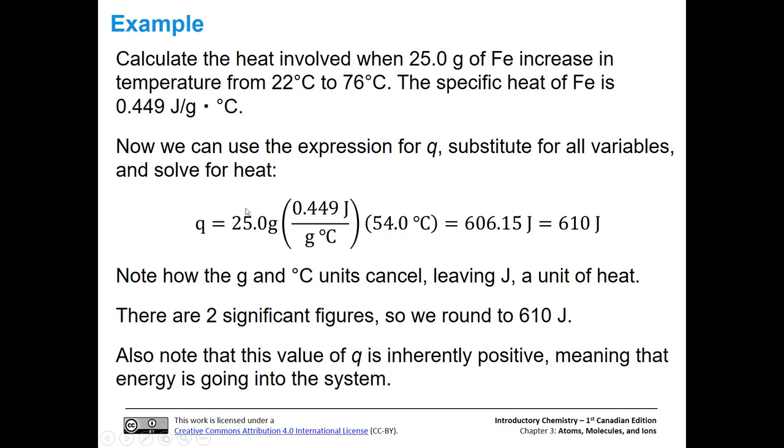Here's our mass of the metal. Q is equal to m times small c times delta T. So here's the mass of the metal. There's the heat capacity, which was given to us. Here's the temperature change in degrees C, and we're going to get 606.15 joules.